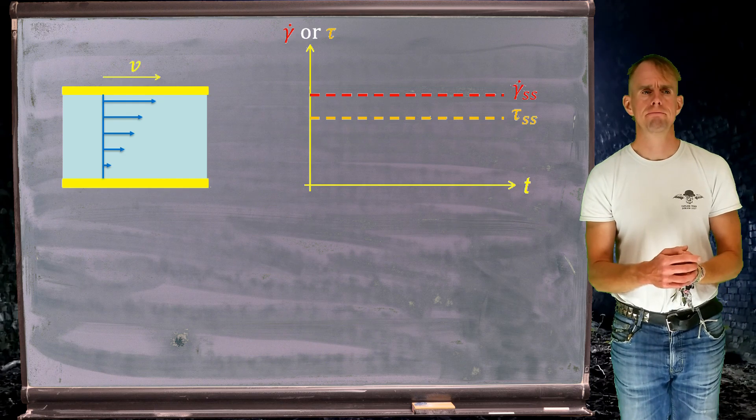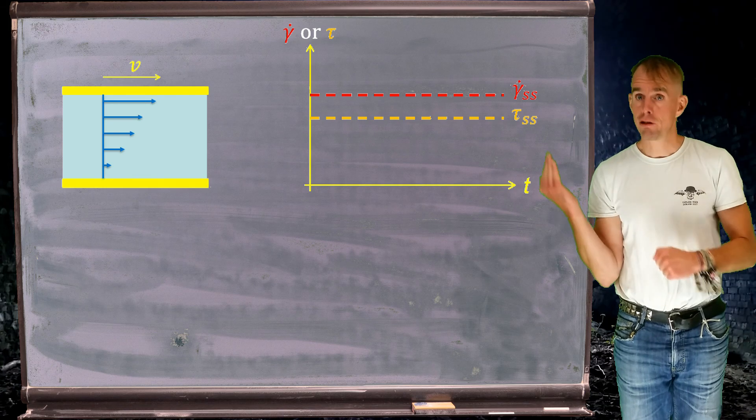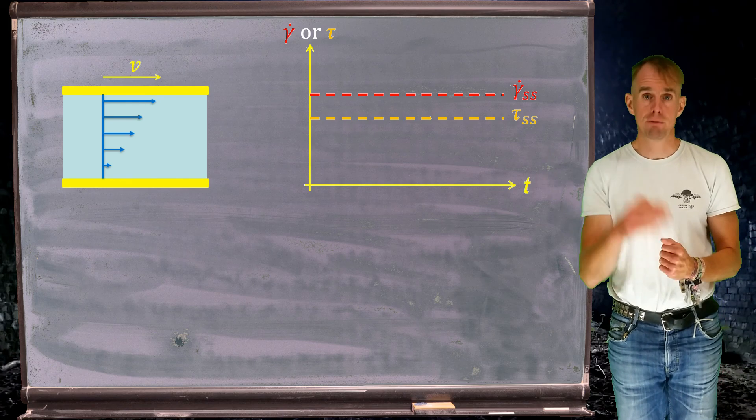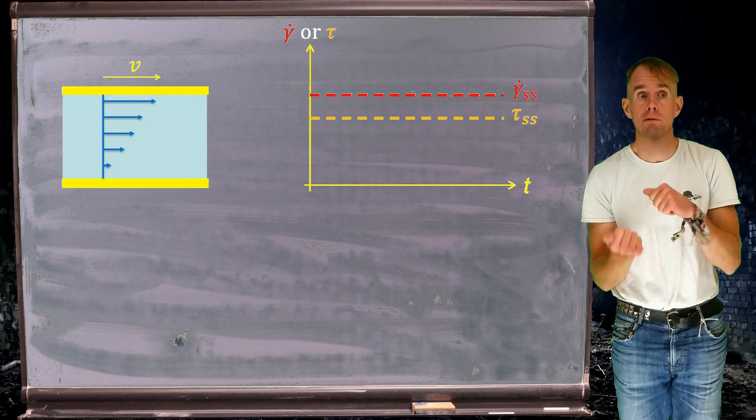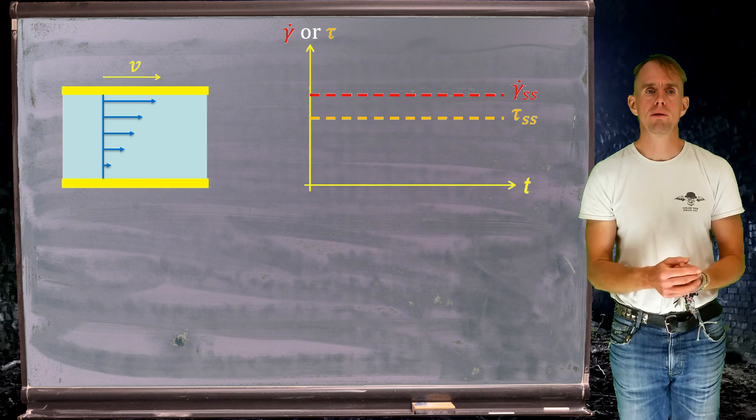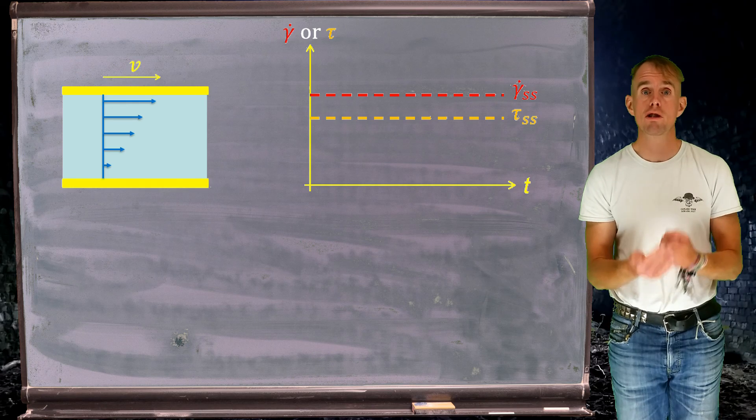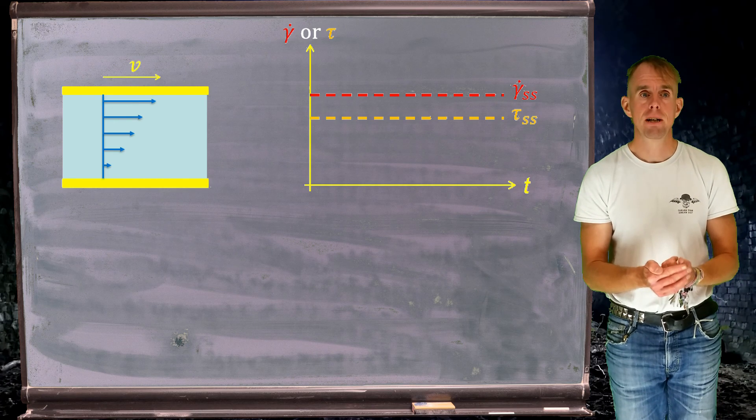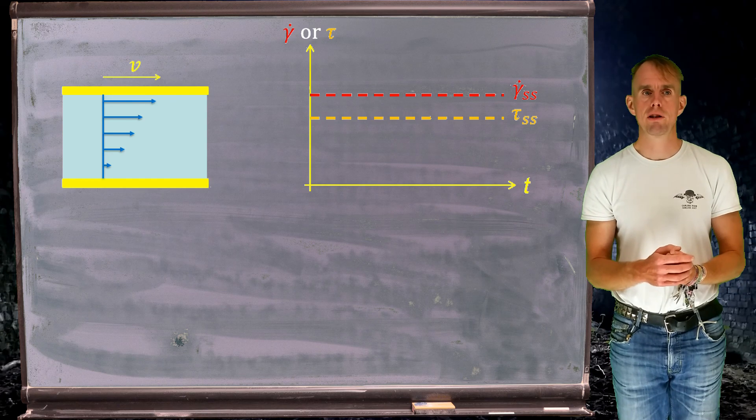What we find in a practical sense is that if our relaxation times are really fast and our flows are really slow, we can use that equation for some rheometric use. So with that caveat stated, let's think about shear flow. Our shear flow is fluid between two parallel plates, shown here in yellow, and the fluid is in blue. I'm moving my top plate at velocity V and holding the bottom plate stationary.